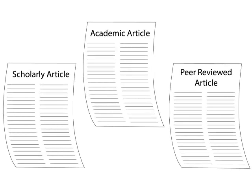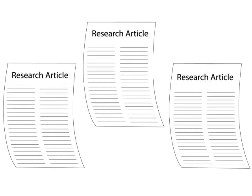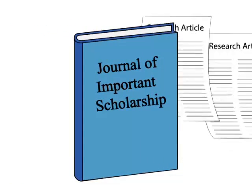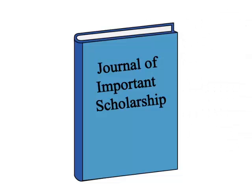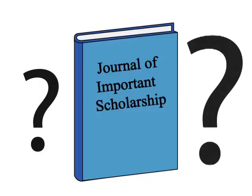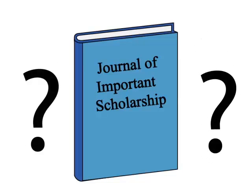Essentially, these are all different ways of describing the same thing: research articles that have been published in scholarly journals. But what is a research article, and how does it get published in a scholarly journal?